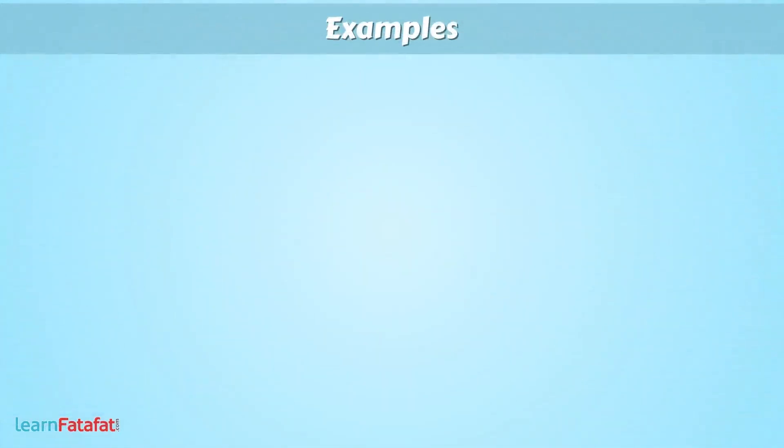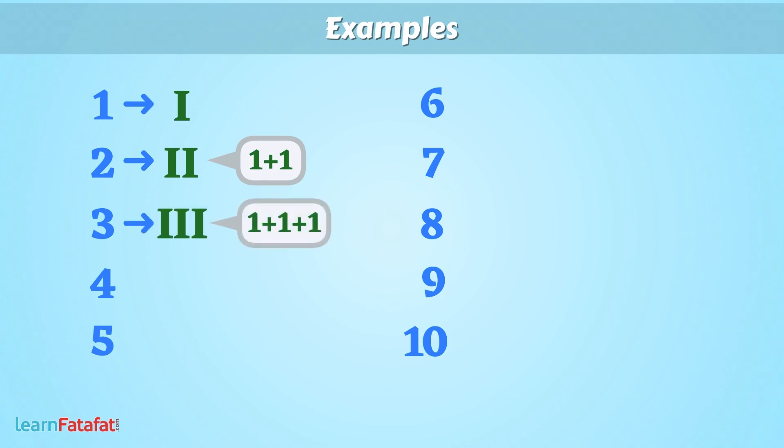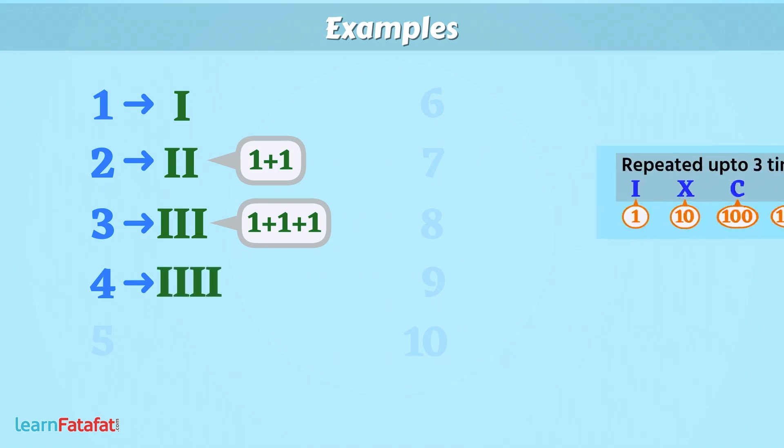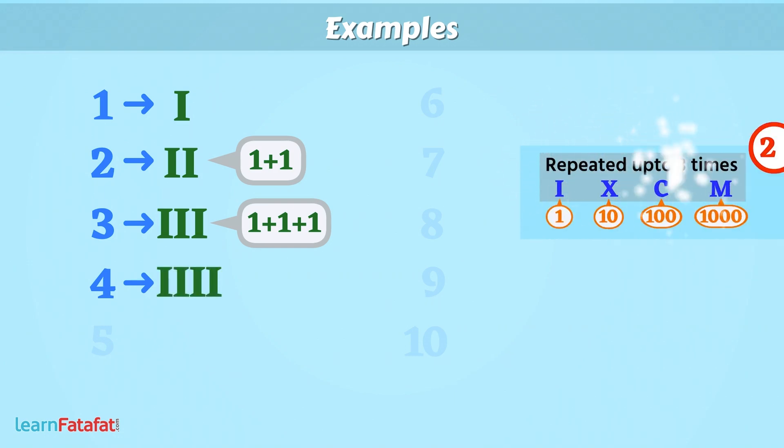Write given numbers in Roman numerals. 1 is I. 2 is II, repeat 1 twice. 3 is III, repeat 1 thrice. 4 can be written like this, but by rule 2, we cannot repeat a symbol more than 3 times, so this is incorrect.